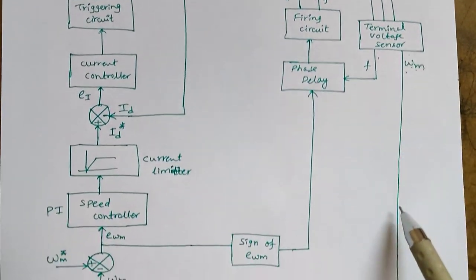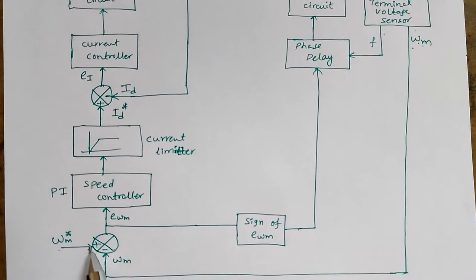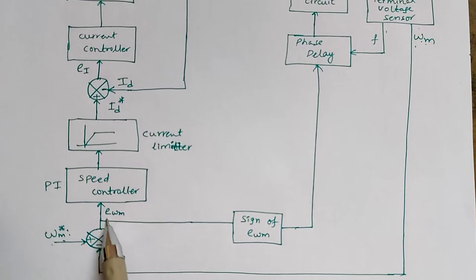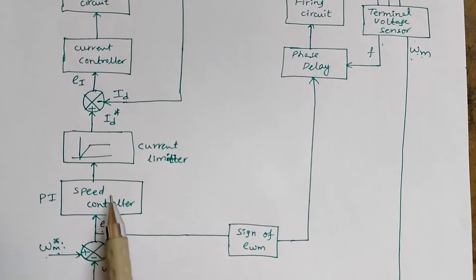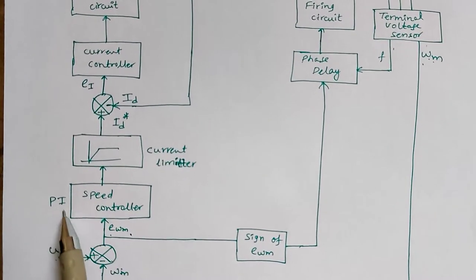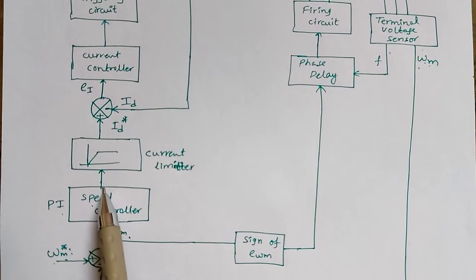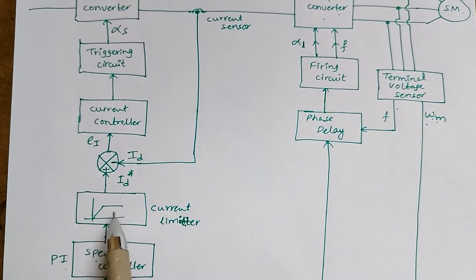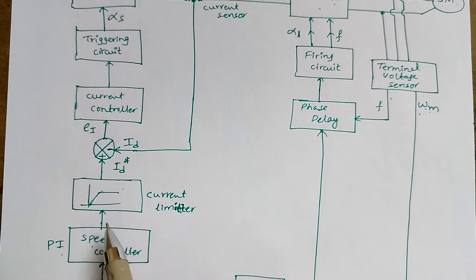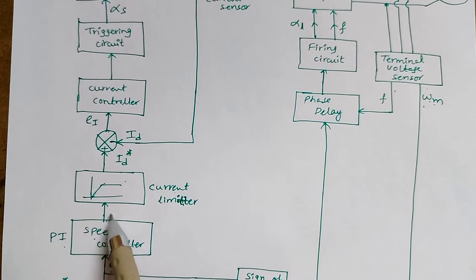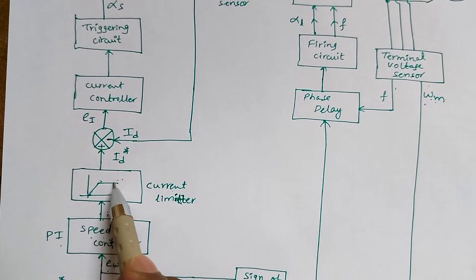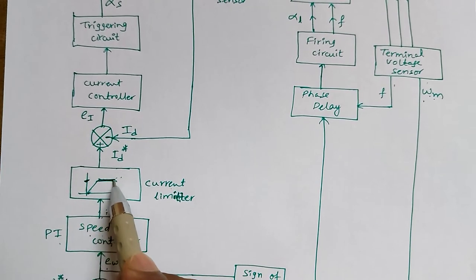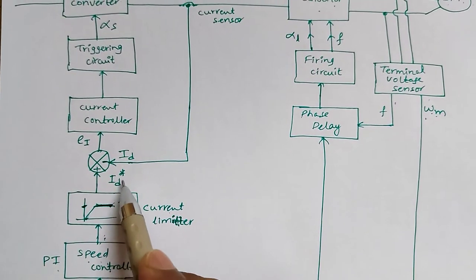The actual speed is compared with the reference speed, and the difference gives the speed error. This error is processed through a speed controller, which may be a PI controller. The PI controller output is connected to a current limiter. Since the converters are rectifiers, they provide only positive current, so only a positive-side current limiter is used. If the output exceeds the maximum limit of the current limiter, it is saturated at that particular value, and that is treated as the reference current.